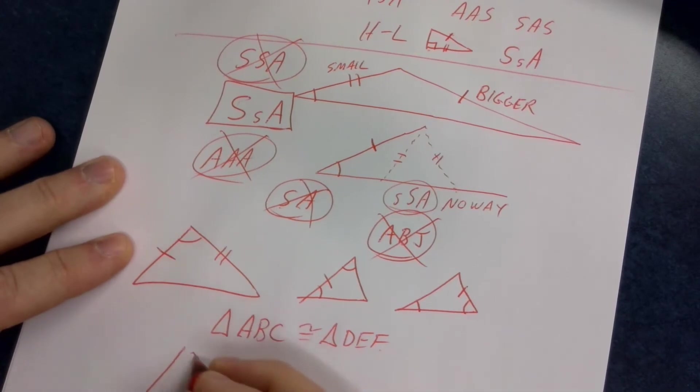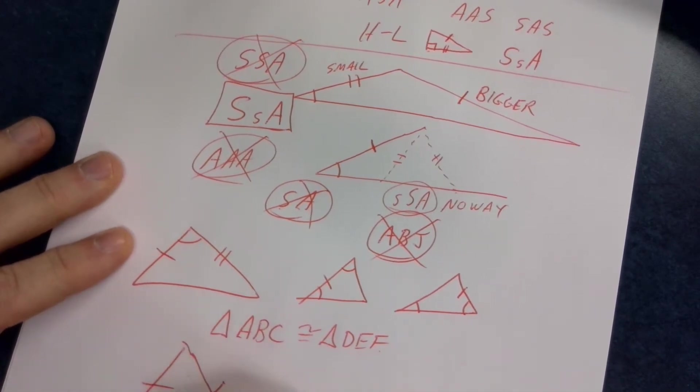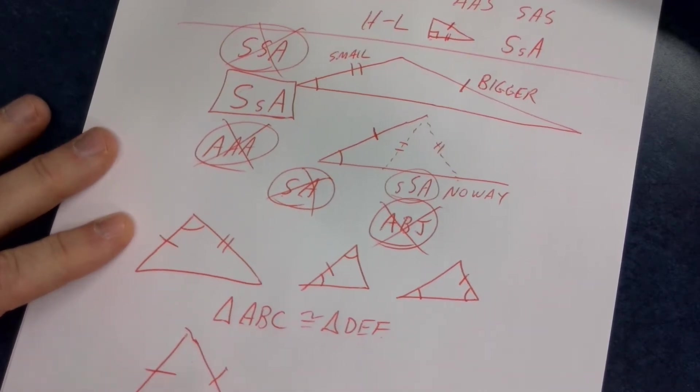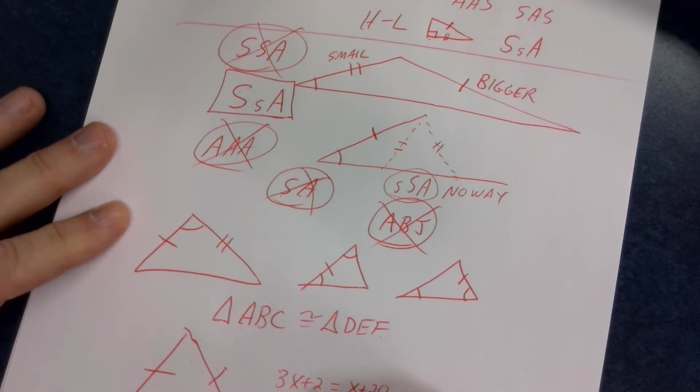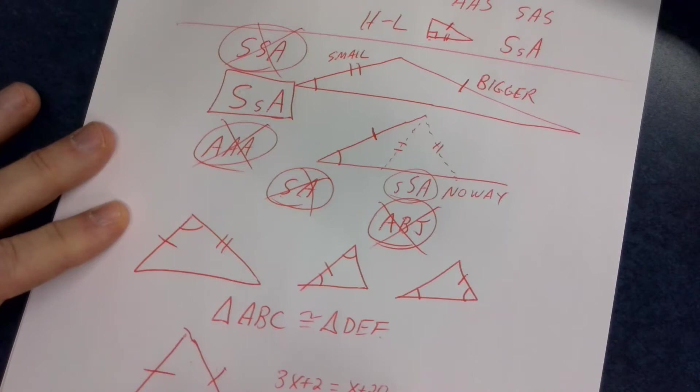You got to be able to do algebra stuff, so that if I give you this, and I give you 3x plus 2, and I give you x plus 20, that you should be able to solve for those two angles, because if these two sides are equal, those two angles are equal, and you can write 3x plus 2 equals x plus 20, 2x equals 18, x equals 9,